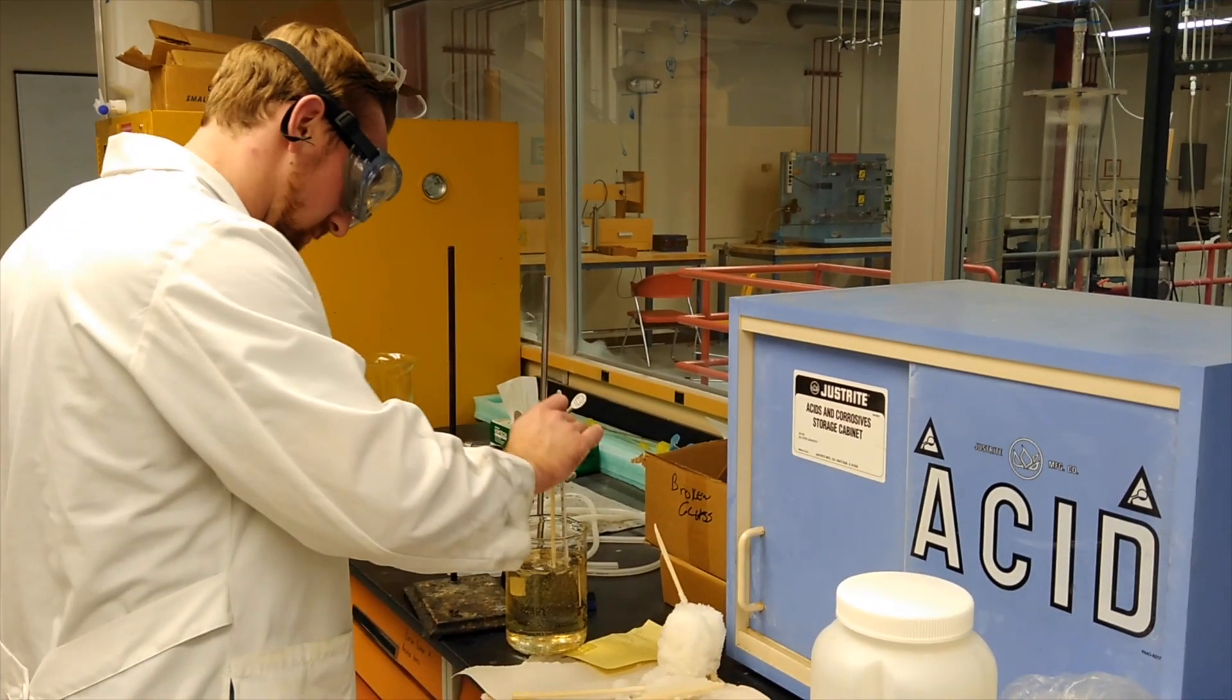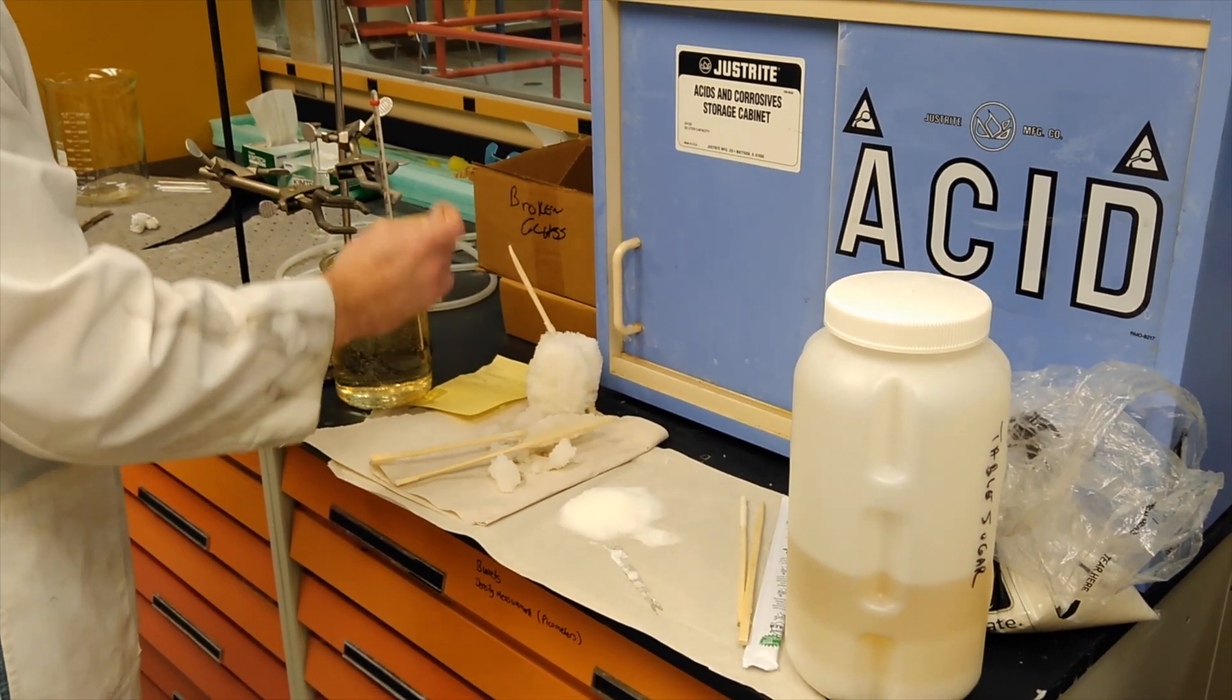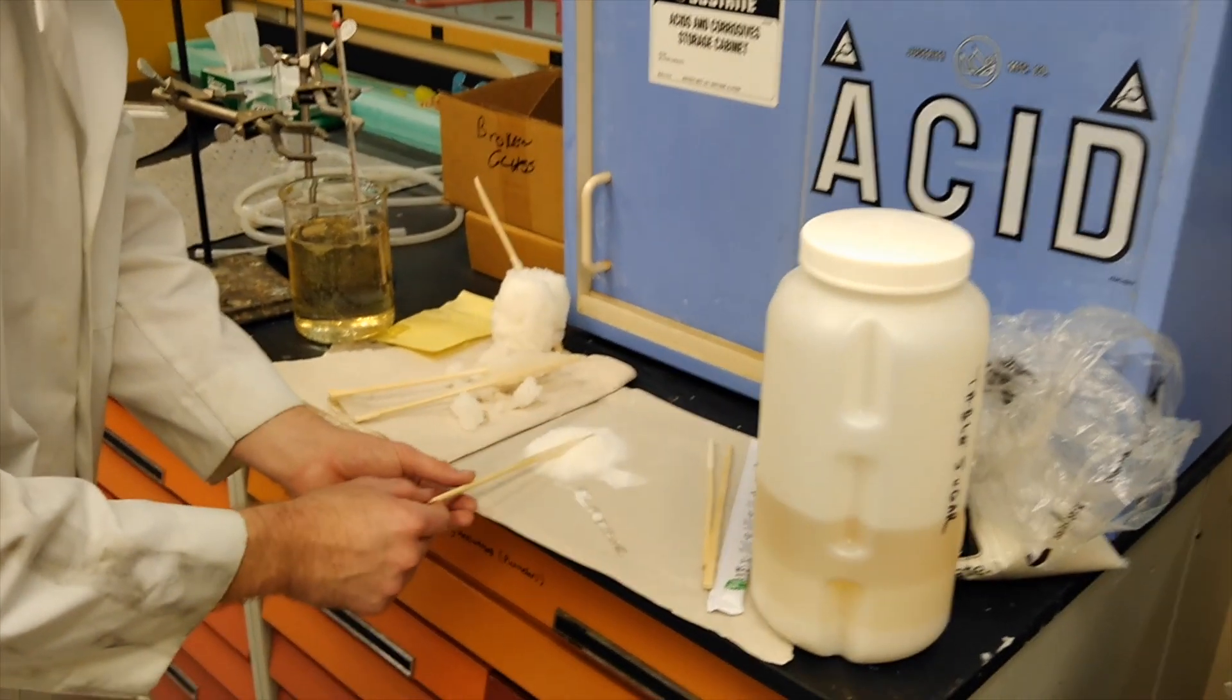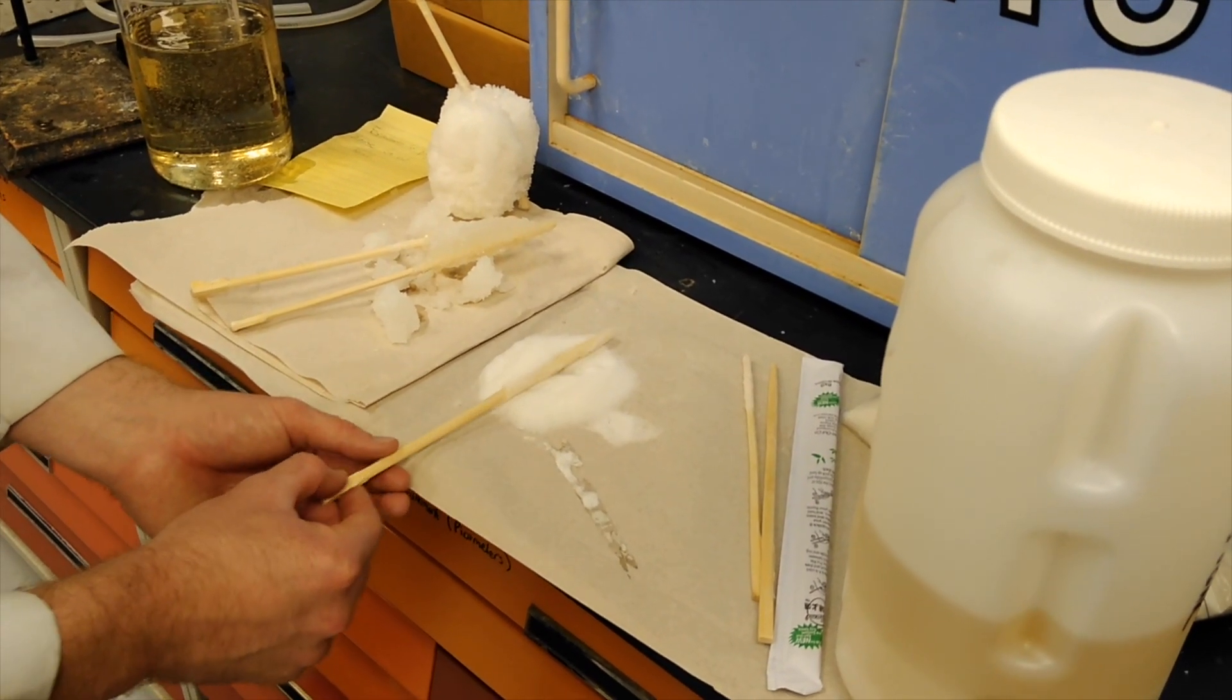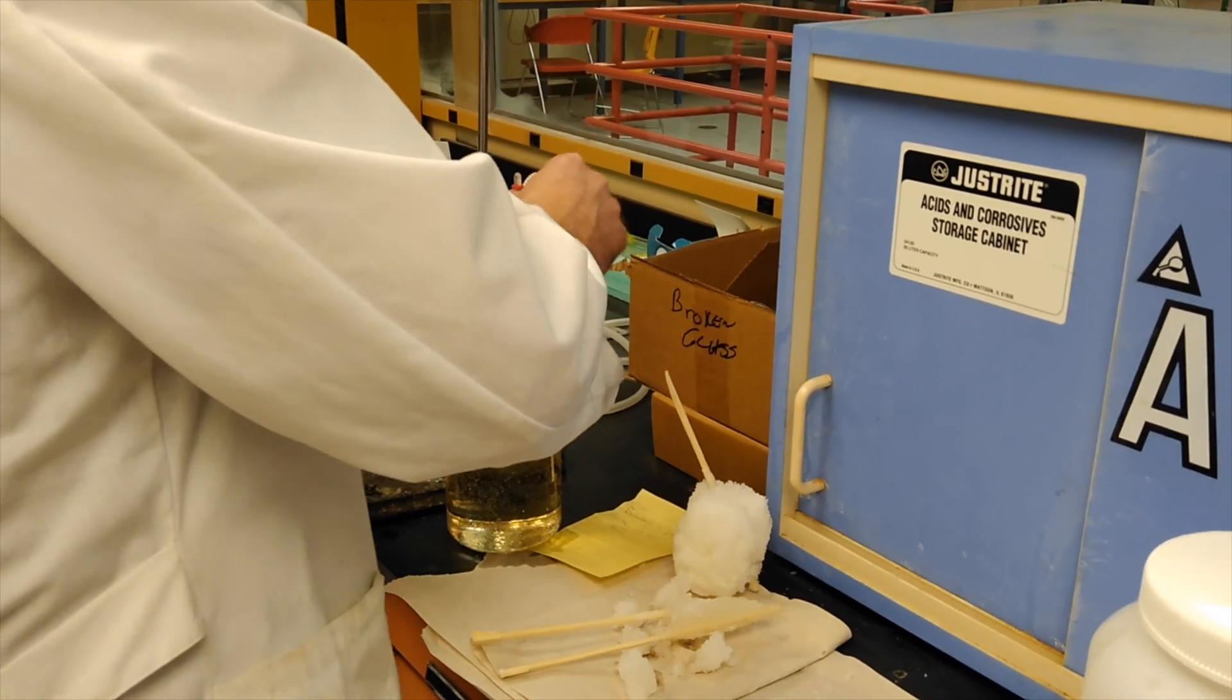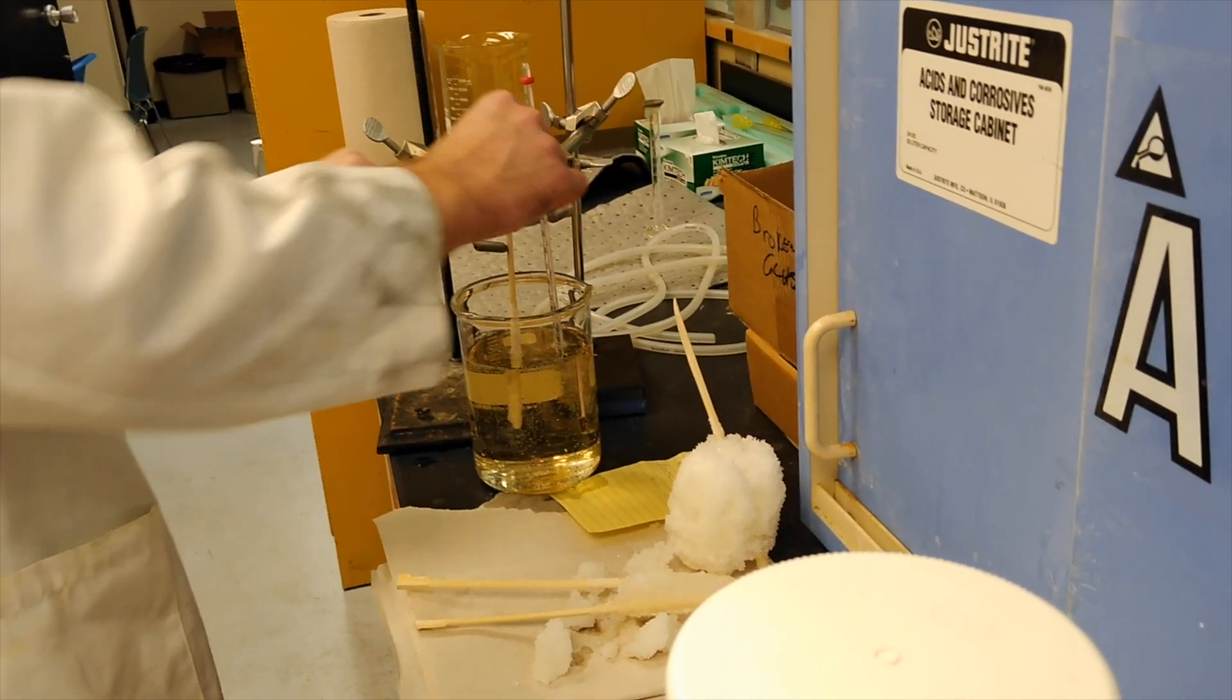So here we go. We're going to dip this in the sugar solution. Get that all covered in it. Get off the excess. And now we're going to roll this in some other sugar molecules and create the activation site. All right, that's pretty well covered to me. So now we're going to take our nucleation site and put it back in the solution. Tighten this guy up. And now we wait for the hardest part of our experiment, is waiting.